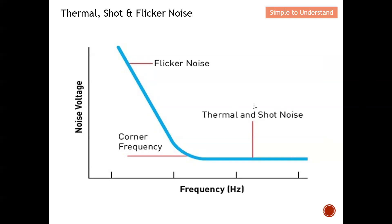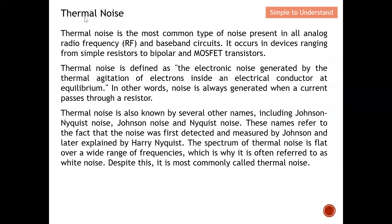In this video I'm going to discuss only flicker noise, thermal noise, and shot noise, concentrating on low frequency and slightly higher frequency to explain what kind of noise dominates at different frequencies. At low frequency, flicker noise dominates; at higher frequency, thermal and shot noise dominate. As you can see, thermal and shot noise are almost flat.